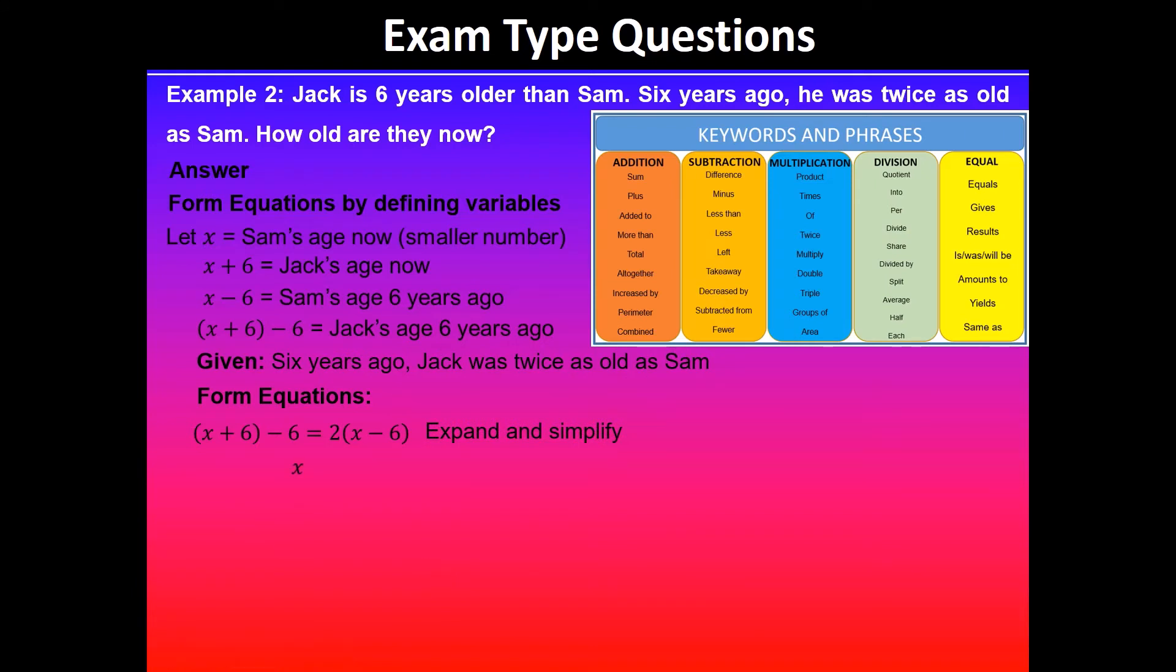So x plus six minus six is x on the left hand side, and if I expand two times x I will get 2x, and two times negative six is negative twelve. And then we can quickly rearrange and solve for x.